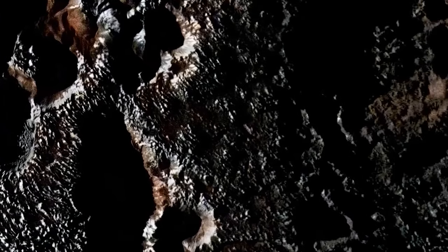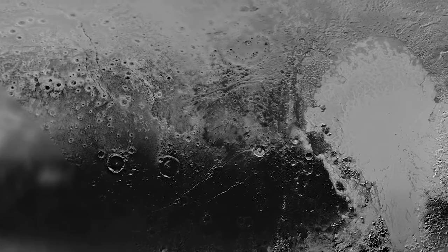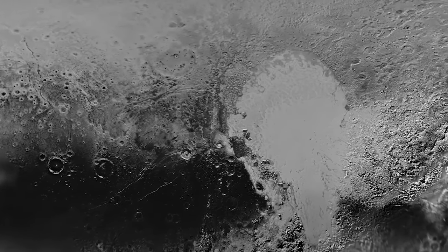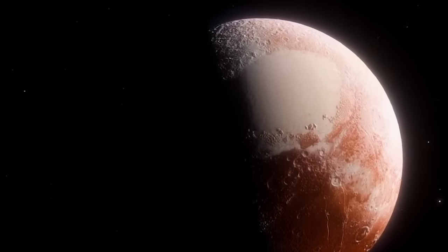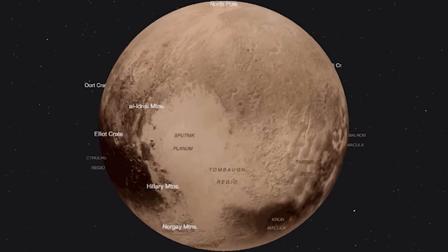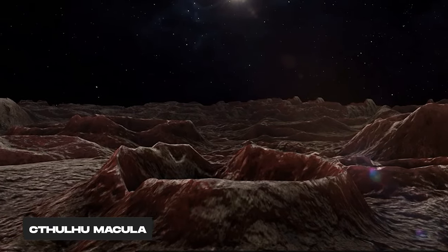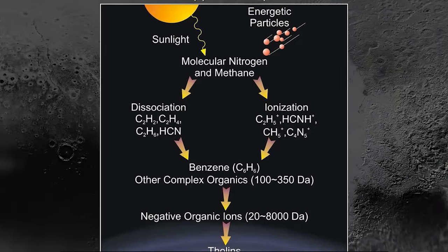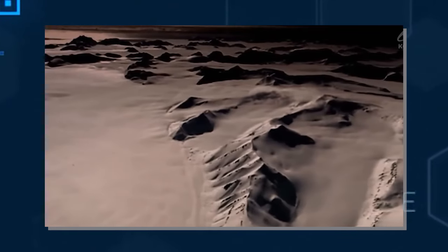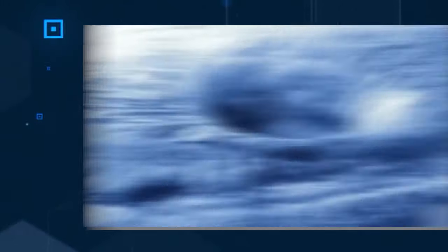The nature of this macula remains enigmatic, but it is theorized that their dark appearance is attributed to a significant presence of tholins and a relatively high concentration of impact craters, indicative of their considerable age. The surface of Cthulhu macula presents a diverse landscape featuring undulating terrain in the western portion, a smooth plain at the center, and a rugged eastern expanse adorned with mountains and craters.